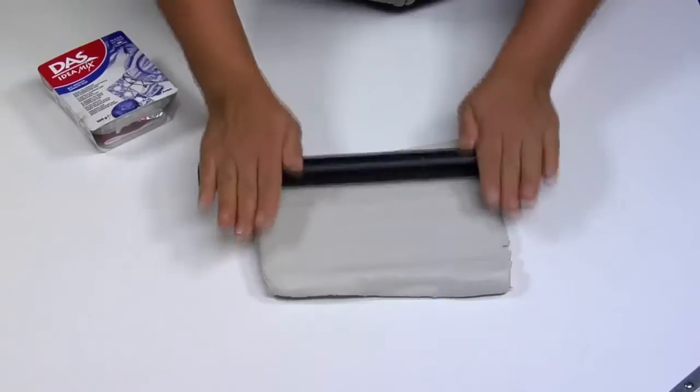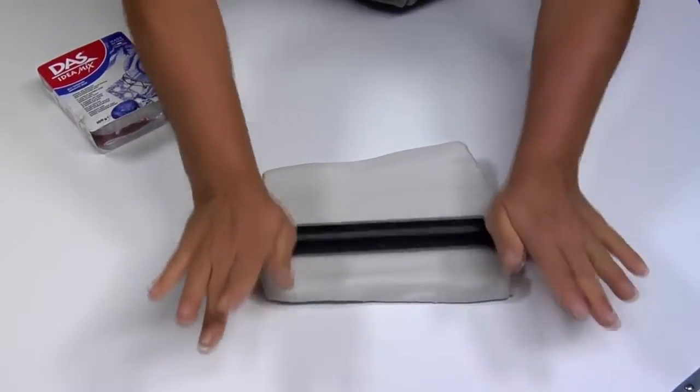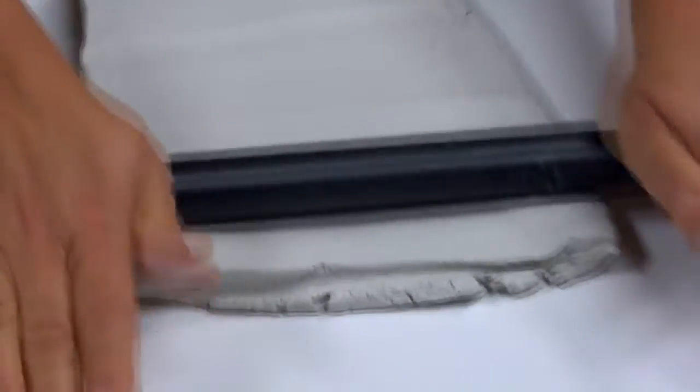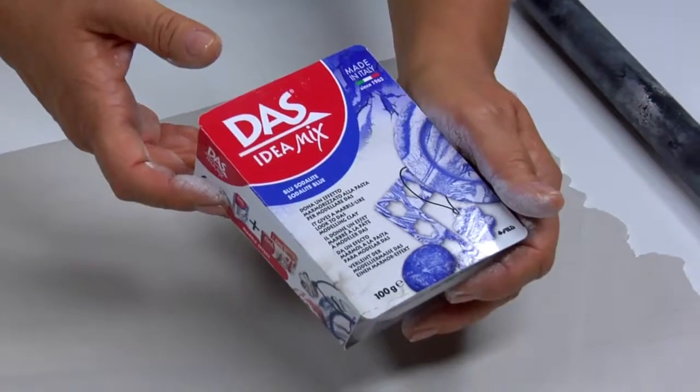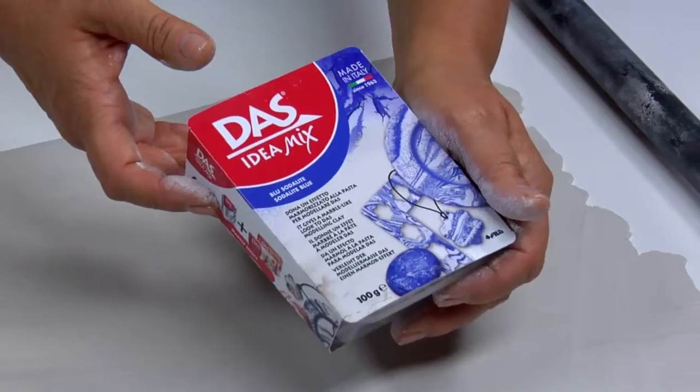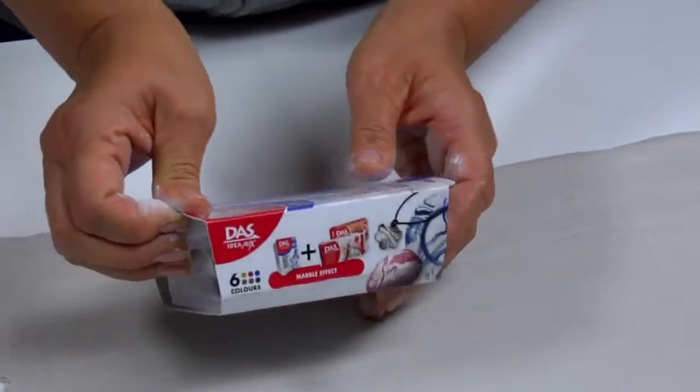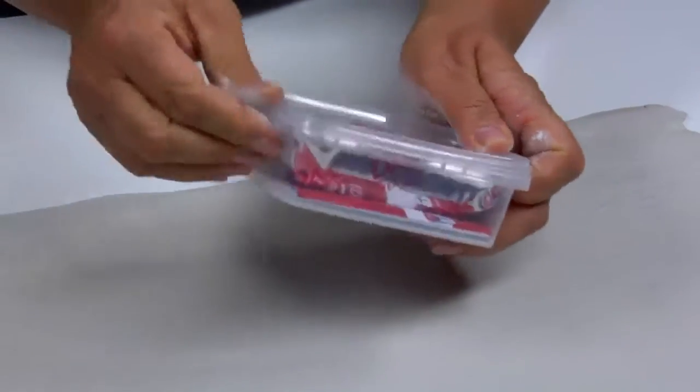Start rolling out 1 kg of DAS white modelling clay using the rolling pin without rings. Take some DAS idea mix marbling clay in the colour you prefer. We have chosen sodalite blue.